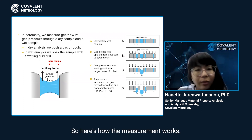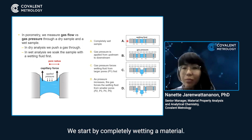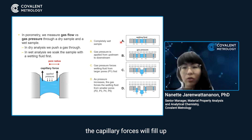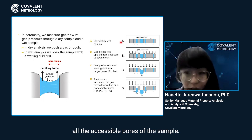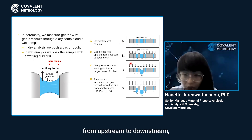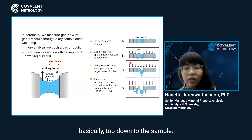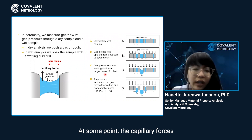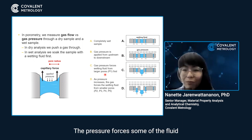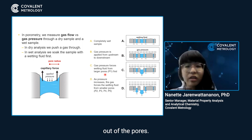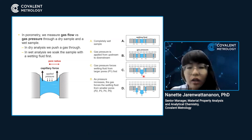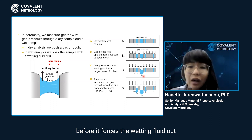Here's how the measurement works. We start by completely wetting a material. The capillary forces, if we saturate the material, will fill up all the accessible pores of the sample. Once the sample is completely wet, we apply a gas pressure from upstream to downstream — basically top down to the sample. At some point, the capillary forces are overwhelmed by the gas pressure. The pressure forces some of the fluid out of the pores, and the gas pressure is going to force the wetting fluid out from the larger pores before it forces the wetting fluid out from the smaller pores.